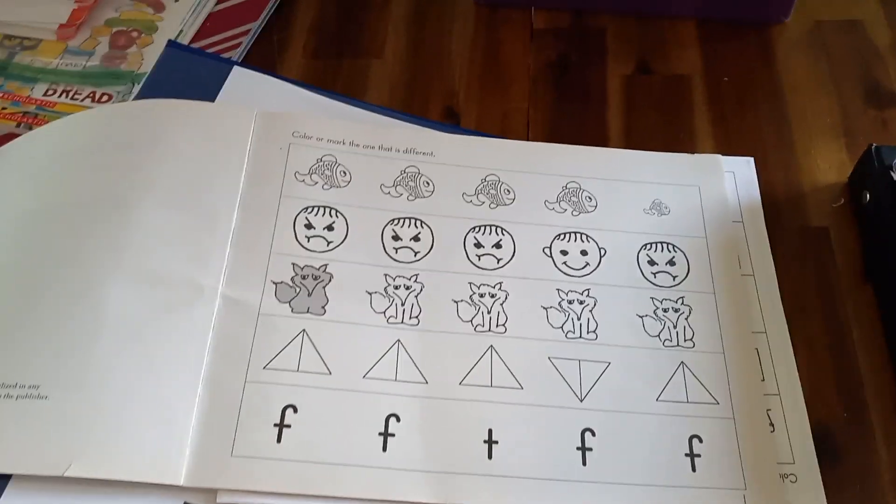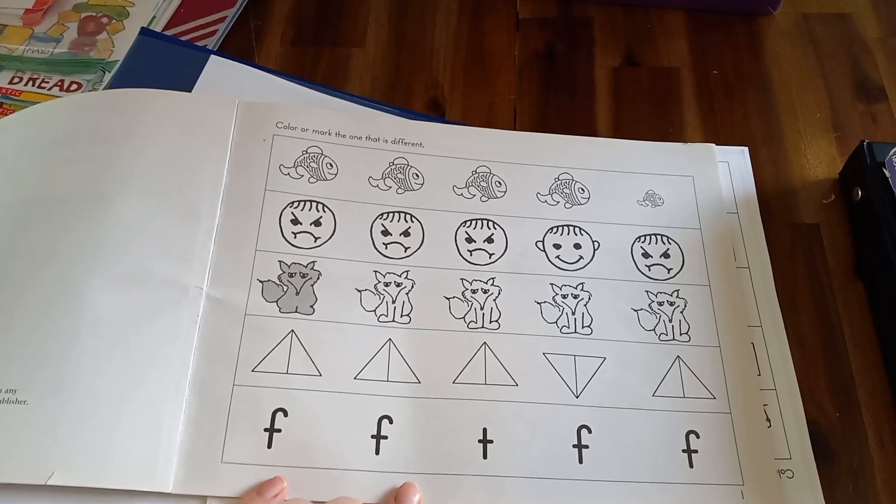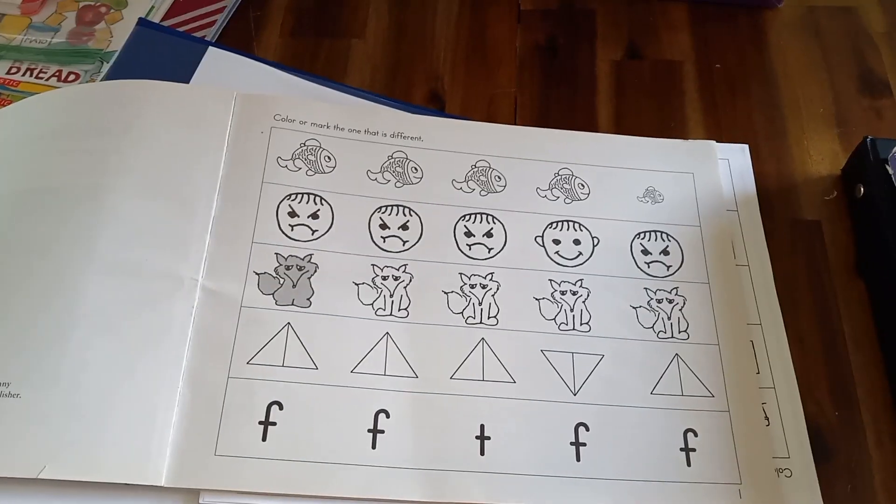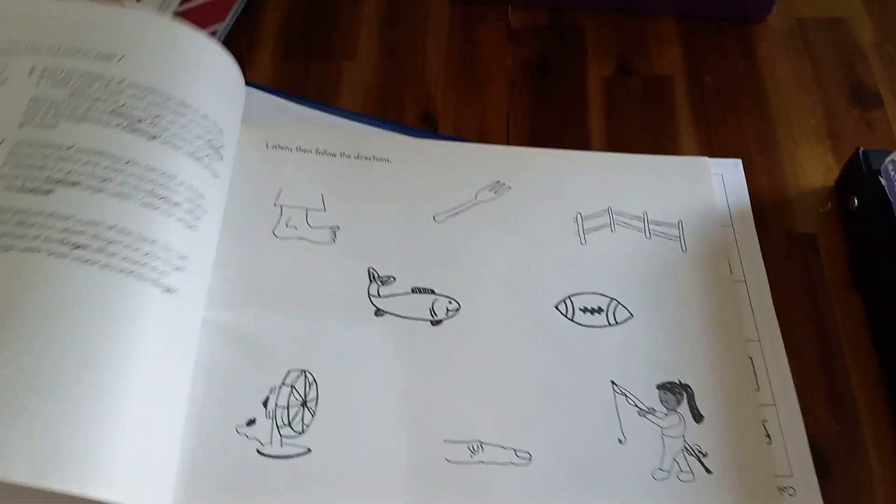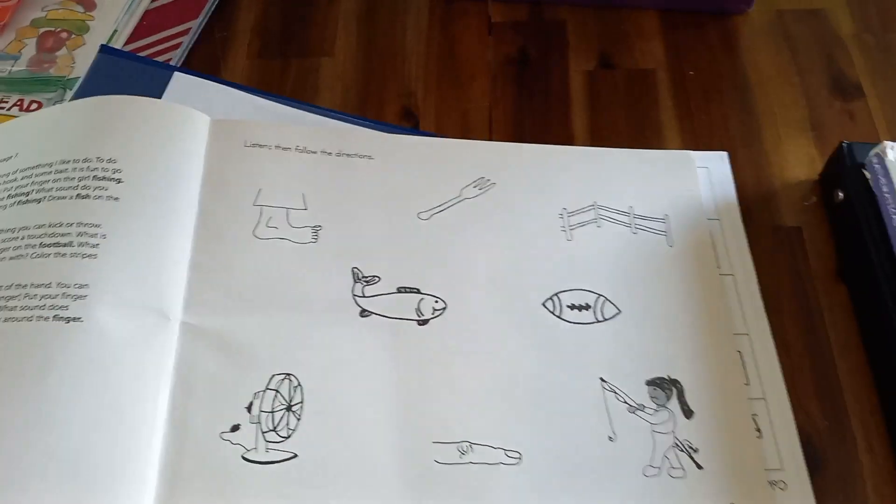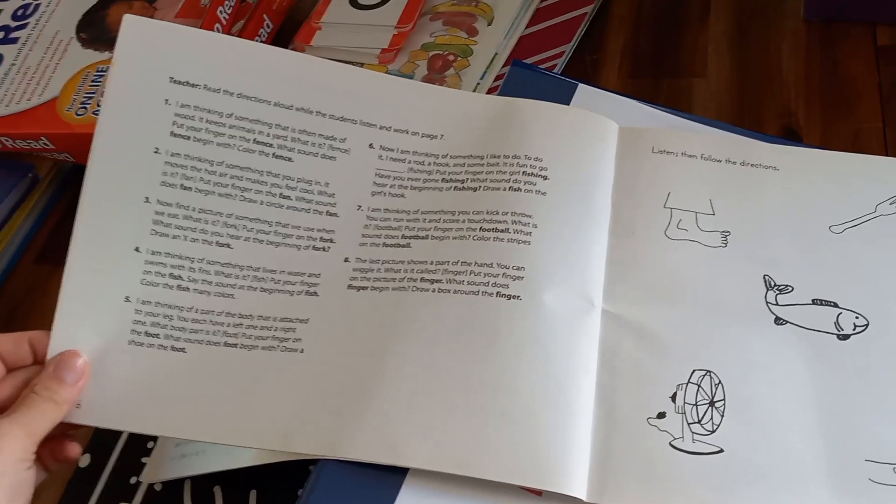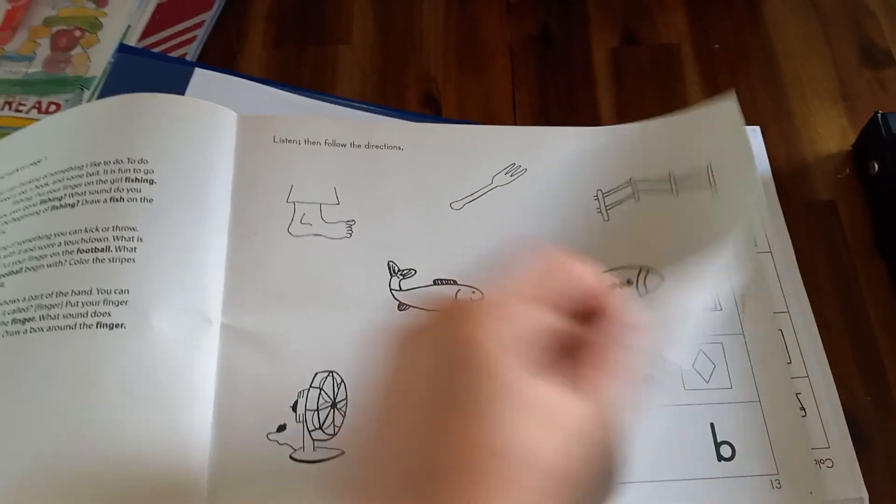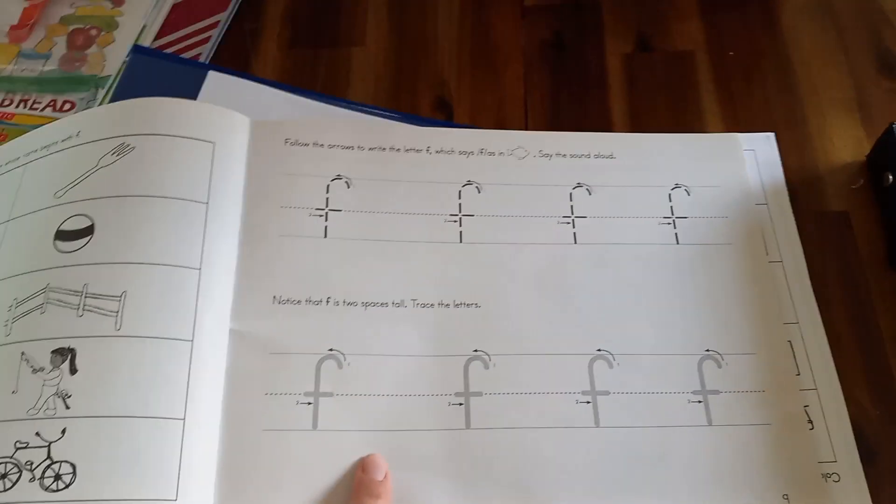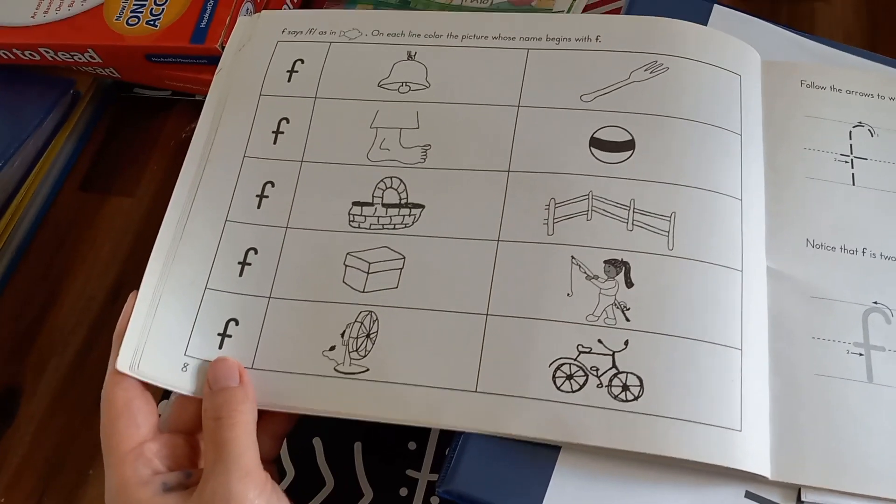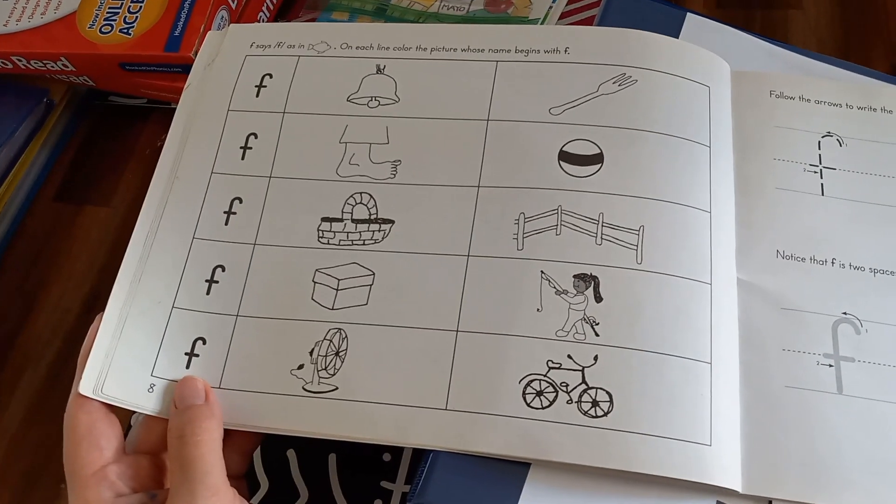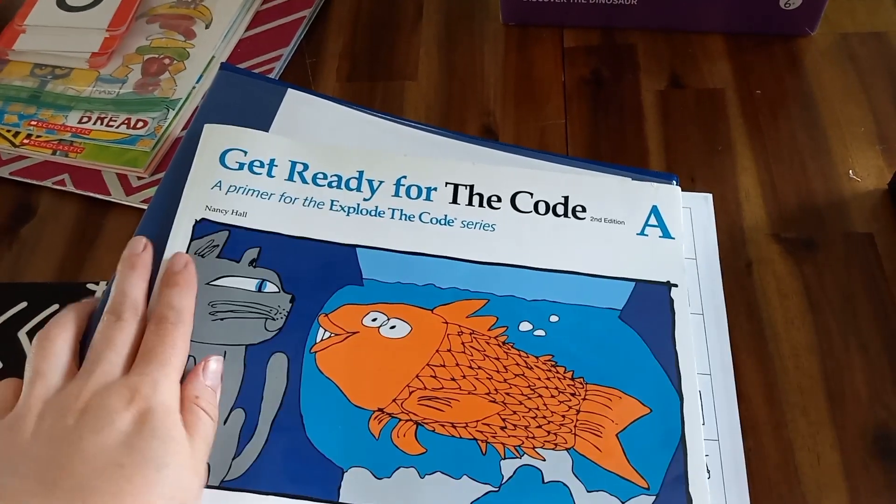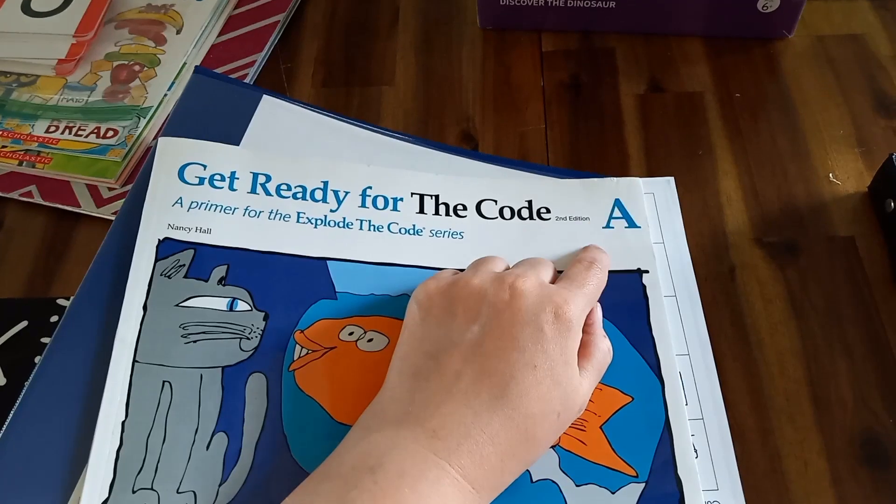Say we did letter F in the Hooked on Phonics. Then we would use that for this book. The first page always starts off with mark the one that is different. And then it goes on and on having the child do activities. Over here it shows, gives you what to say to the child. And it'll have them color or mark in a different way the pictures that start with that letter. Or it'll have you trace the letter or find the picture and color the one that matches the letter. And like I said, I match it to the letter we're doing in the Hooked on Phonics. And that's Get Ready for the Code. They have book A, book B, and book C.